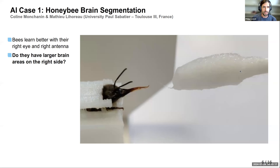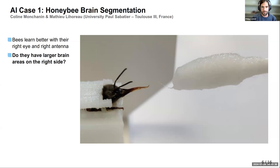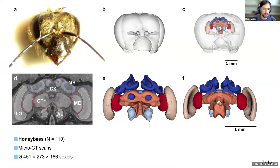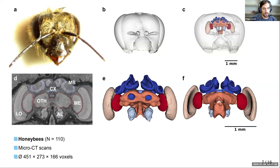The first AI case was a project with colleagues from Toulouse University in France. It's well known that bees learn better with their right eye and right antenna, so the question was whether they also have larger brain areas on the right side. We needed to segment many bee brains for statistical analysis. We had 110 micro-CT scans of honey bee heads — rather small datasets, a couple of hundred voxels in each dimension.